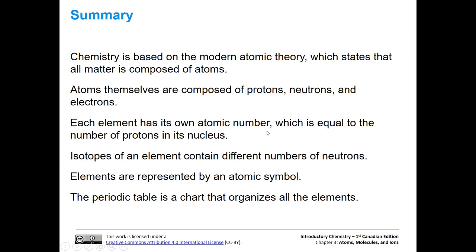To summarize: modern atomic theory states that all matter is composed of atoms, and atoms themselves are composed of protons, neutrons, and electrons. Each element has its own atomic number — the number of protons in the nucleus. Isotopes of elements share the same number of protons but have different numbers of neutrons. All elements are represented by an atomic symbol found on the periodic table, which is a chart that organizes all of the elements.